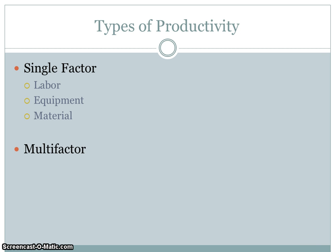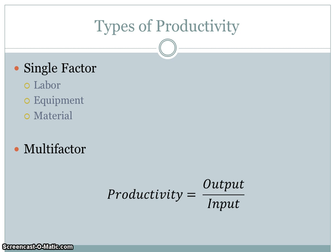Or you could use a more global factor called multi-factor productivity, where you get the productivity of an entire assembly line, an entire assembly facility, or an entire production facility. Regardless of which type of productivity you're trying to analyze, we basically use the same formula: productivity is determined by the amount of output generated by a given amount of input.